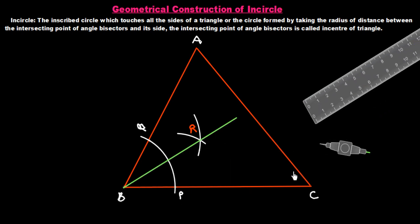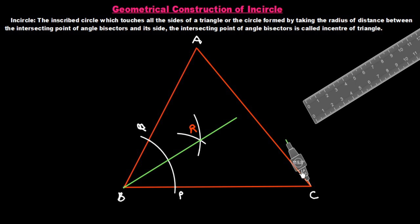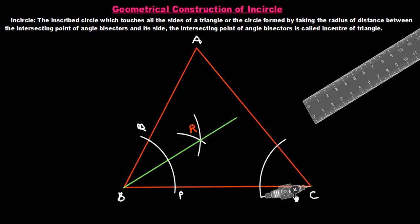Now we draw another angle bisector of angle C. We put the compass needle at C and draw an arc such that it intersects both AC and BC. We give names to these points: this is our point S and this one is our point D.